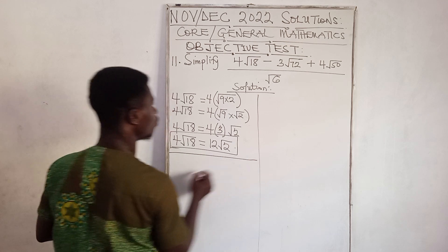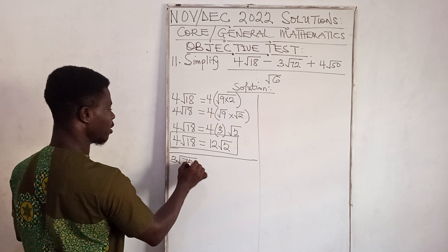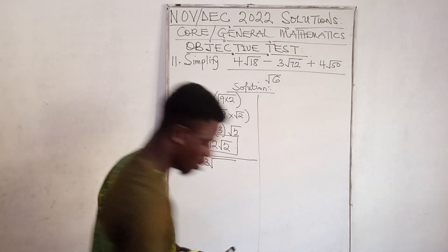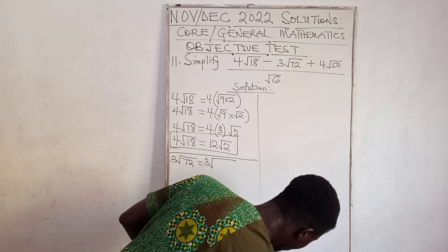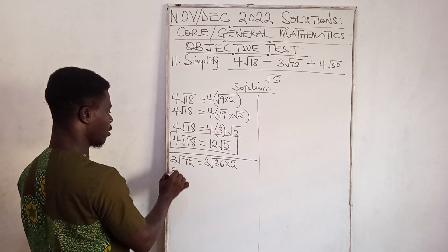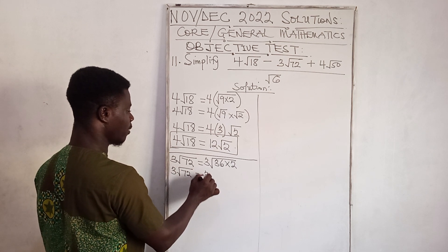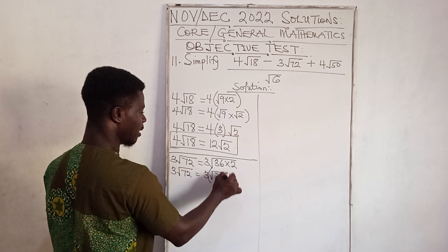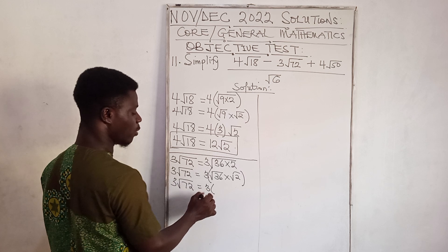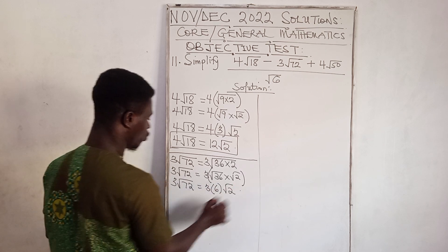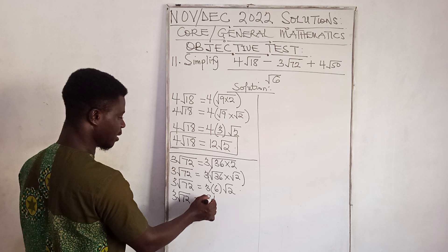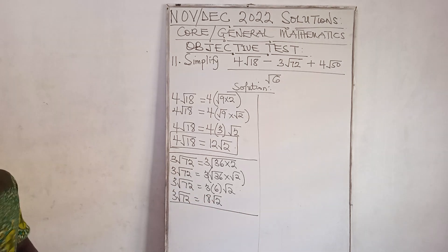Now let's move to 3√72. Using the same method, I need two numbers multiplying to 72 where one is a perfect square. We have 36×2. So 3√72 equals 3 times √36 times √2. √36 gives 6, so we have 3 times 6 times √2, which equals 18√2.